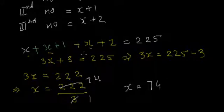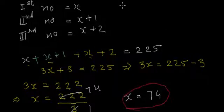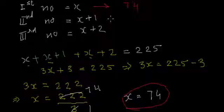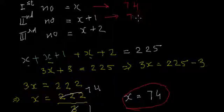And now let's find those three consecutive numbers. If we substitute x equal to 74 over here, we will get the first number which will be 74. And if we substitute x as 74 in x plus 1, we will get 74 plus 1, that is 75. And the third number will be 74 plus 2, which is 76.